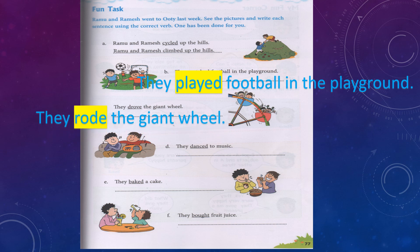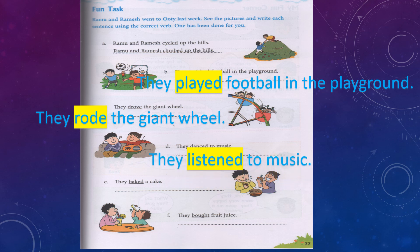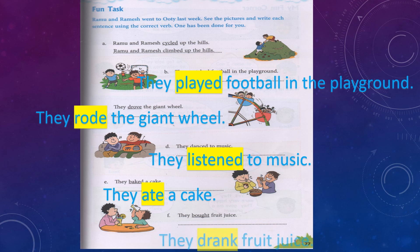They danced to music. They listened to music. They baked a cake. They ate a cake. They bought fruit juice. They drank fruit juice.